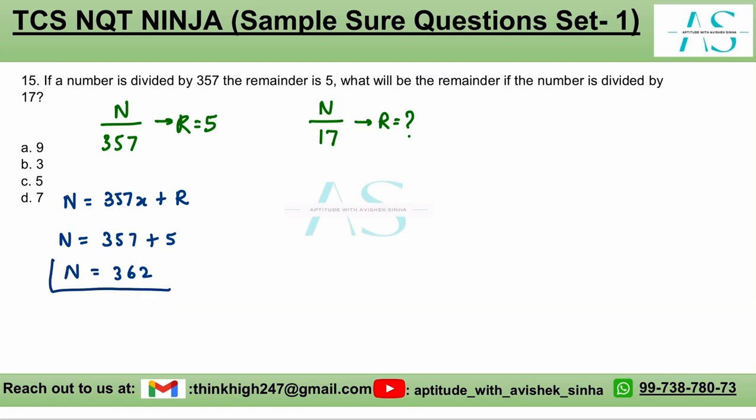We have a number with us. We need to divide this number by 17. We do that 362 divided by 17. I am writing the question now. 17, 2 times 34. Then you have 22. 17, 1 times 17. And then you have the remainder as 5.